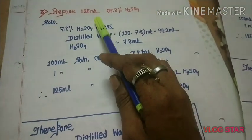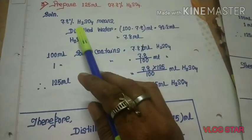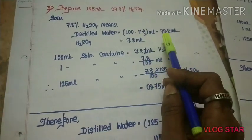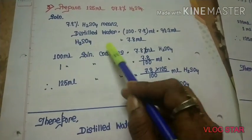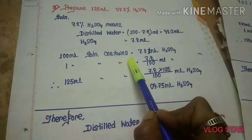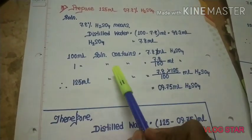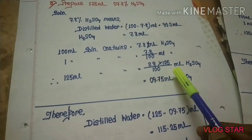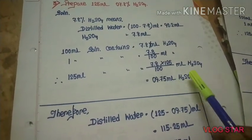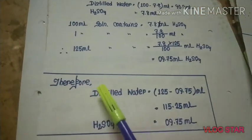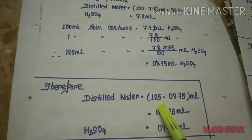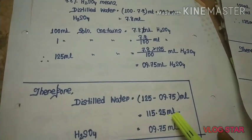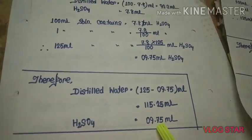Prepare 125 ml of 7.8% H₂SO₄. 7.8% H₂SO₄ means distilled water = 92.2 ml, H₂SO₄ = 7.8 ml per 100 ml solution. 100 ml solution contains 7.8 ml H₂SO₄. 125 ml solution contains (7.8 × 125)/100 = 9.75 ml H₂SO₄. Therefore: H₂SO₄ = 9.75 ml, distilled water = 125 − 9.75 = 115.25 ml.